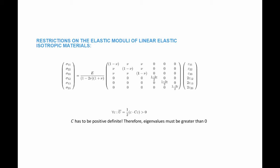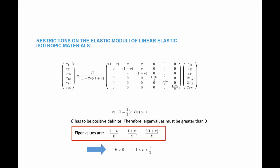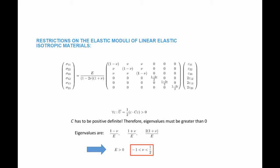Therefore, if you remember the section on positive definite symmetric matrices, this implies that the eigenvalues must all be greater than zero. If you calculate the eigenvalues for this matrix — you can put it in Mathematica and calculate the eigenvalues — you'll find that the eigenvalues are (1 minus Poisson's ratio) over E, (1 plus Poisson's ratio) over E, and (2 plus Poisson's ratio) over E. The restriction that those three have to be greater than zero implies that E has to be greater than zero, and Poisson's ratio has to be between negative one and one half.